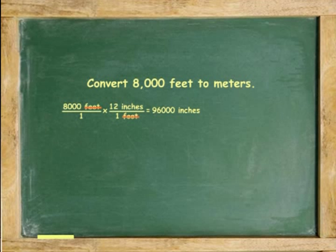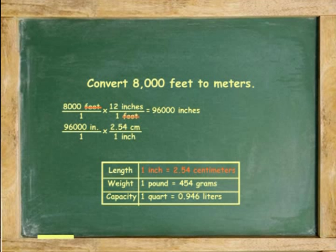Next, convert inches to centimeters. 96,000 inches over 1 times 2.54 centimeters per 1 inch. Cancel inches. Multiply 96,000 times 2.54. You get 243,840 centimeters.